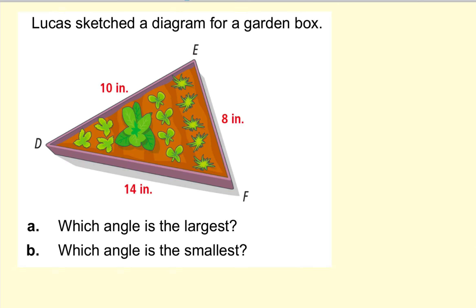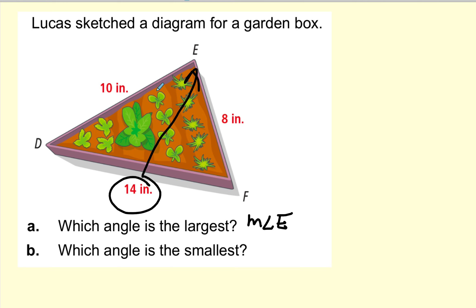Let's go ahead and use that. Let's try to figure out the largest angle and the smallest angle. The largest angle will always be opposite the longest side. So opposite the longest side will be the measure of angle E — angle E will have the largest measure. For the smallest measure, we look at the shortest side, and the smallest angle is always opposite the shortest side, so that will be the measure of angle D.